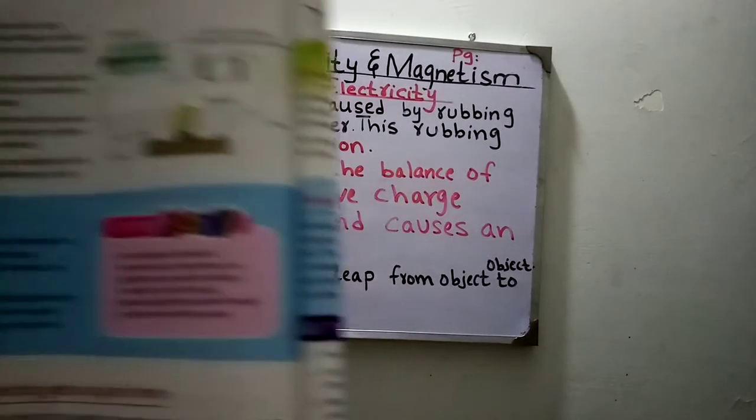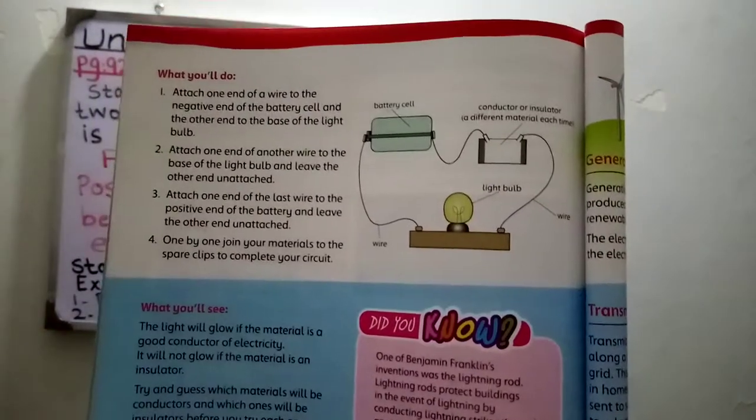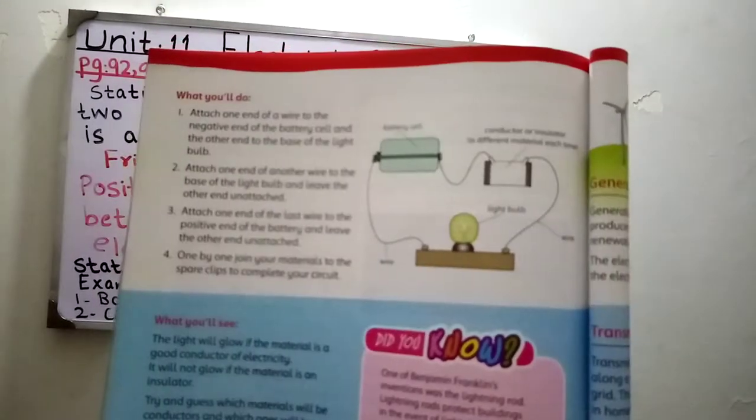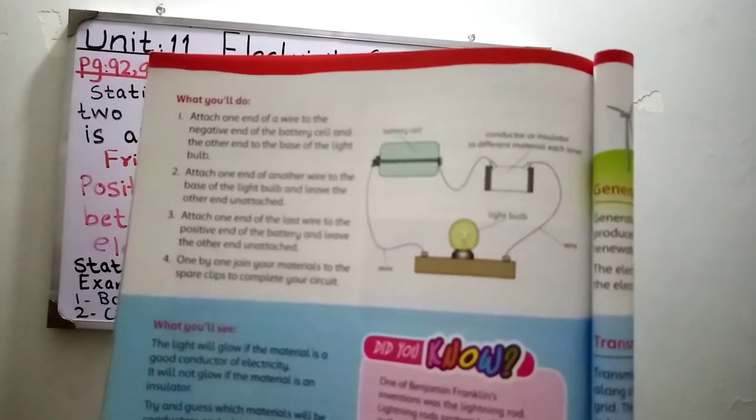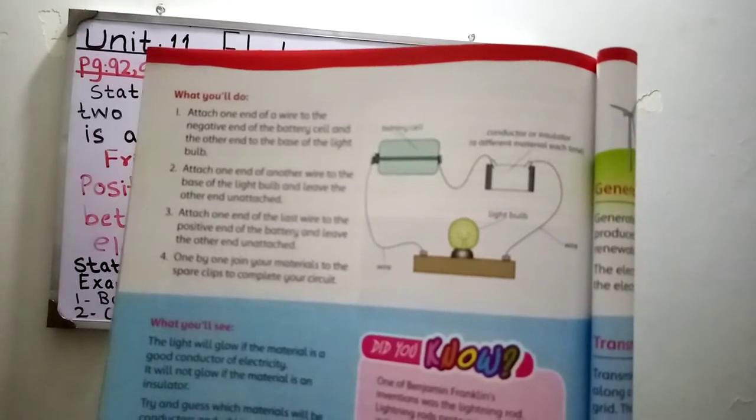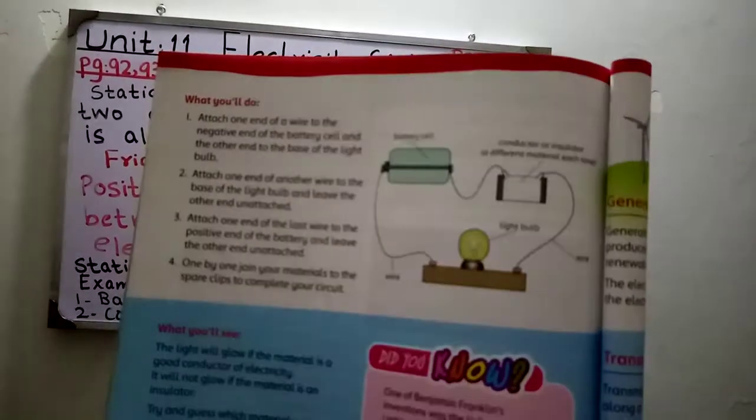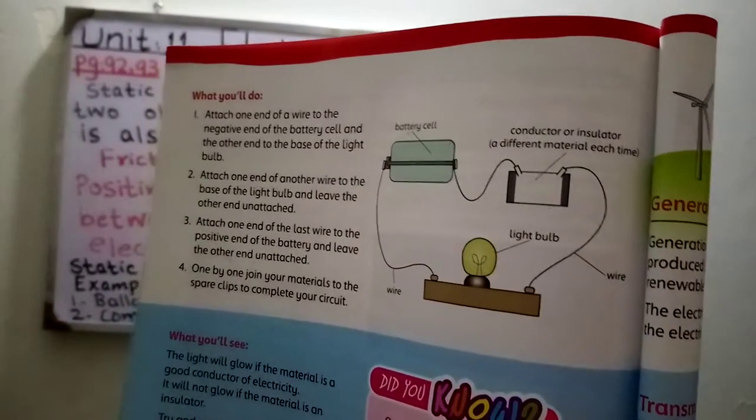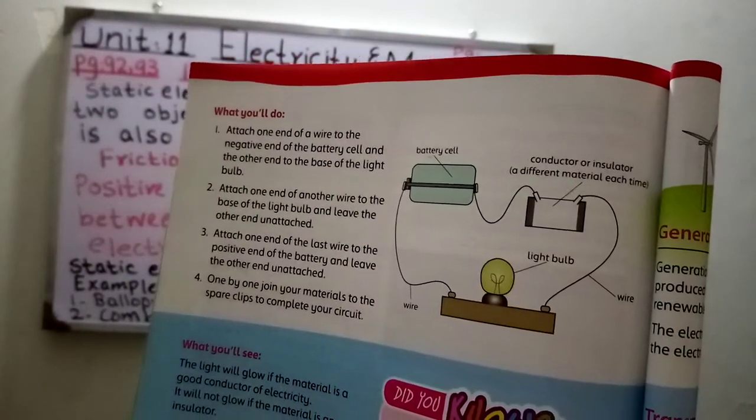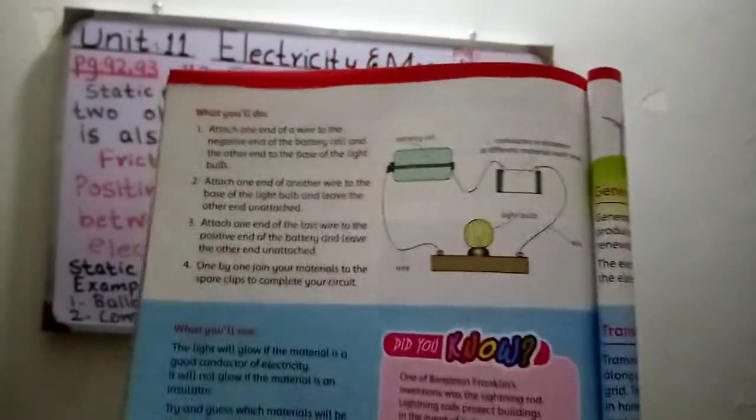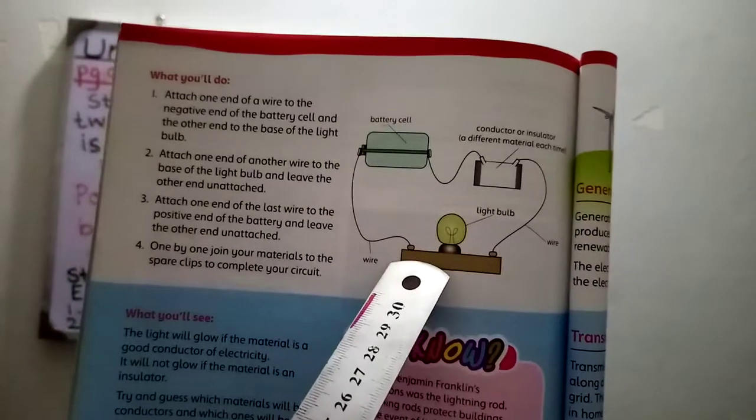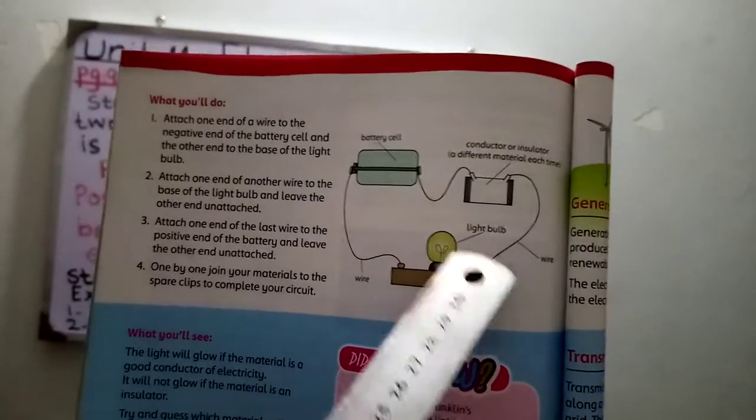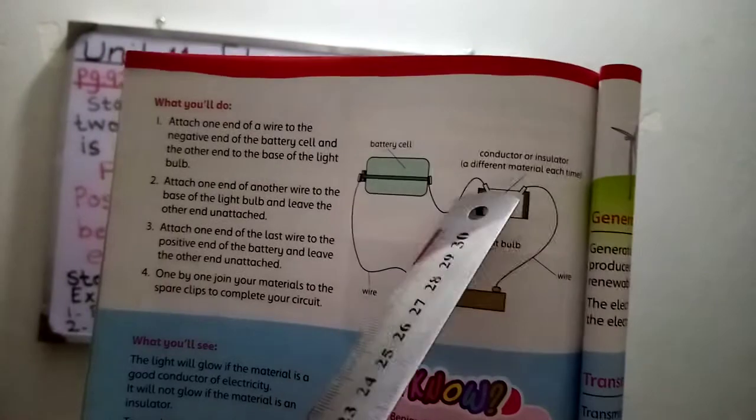Attach one end of another wire to the base of the light bulb and leave the other end unattached. We will test different materials - conductors and insulators - by connecting them to the terminal each time.